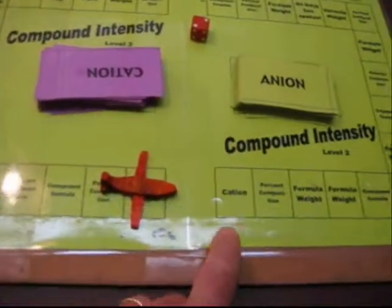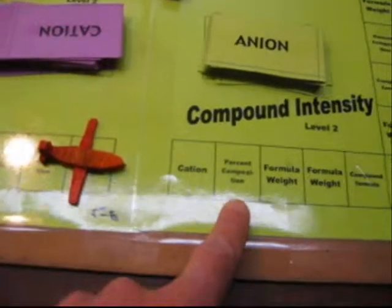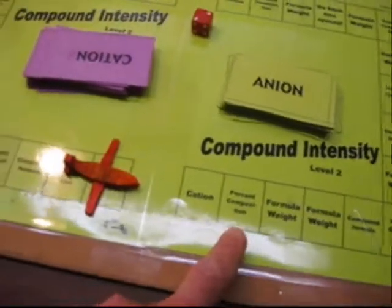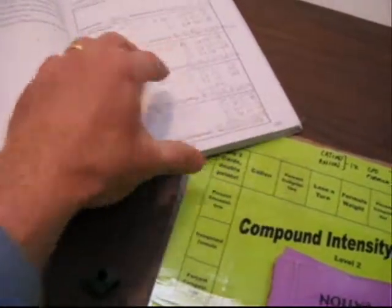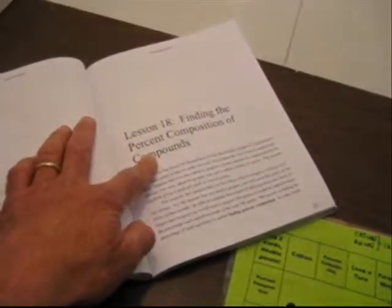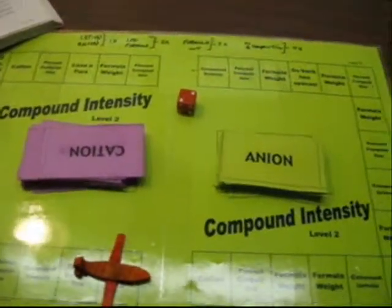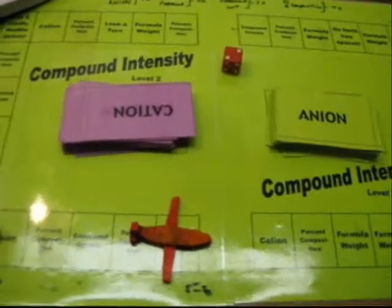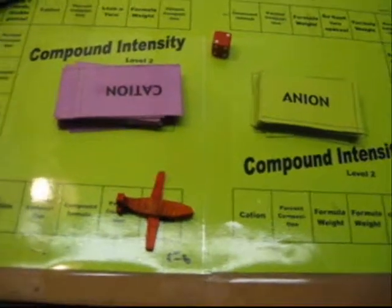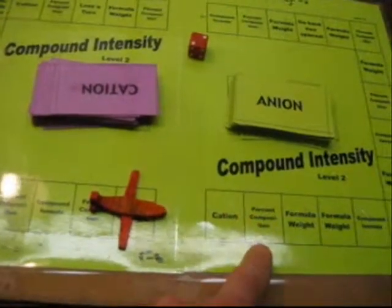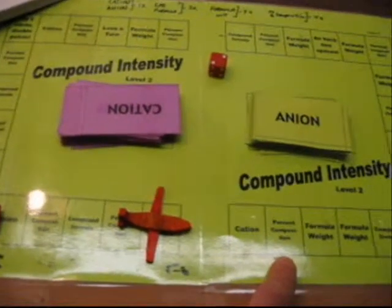The added space on Level 2 is finding the percent composition of a compound. This is Level 2, so it goes through Lesson 18 in the student book, which is finding percent composition of compounds. Because this is another additional step beyond finding a formula weight, the point value earned for being correct in finding the percent composition of that compound is quadruple point value.